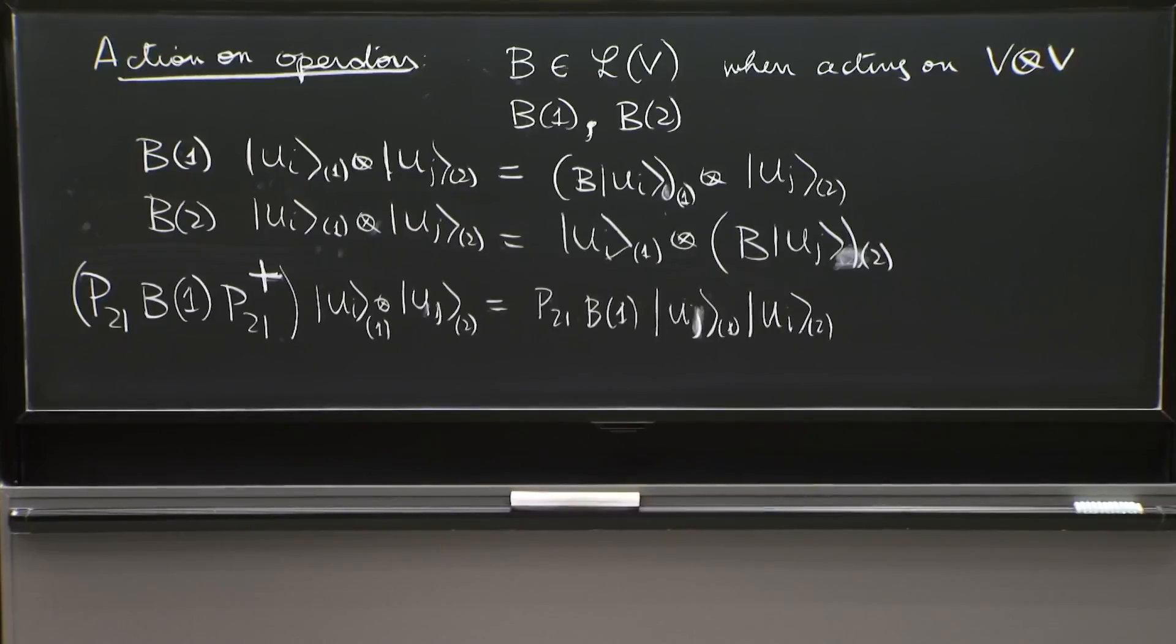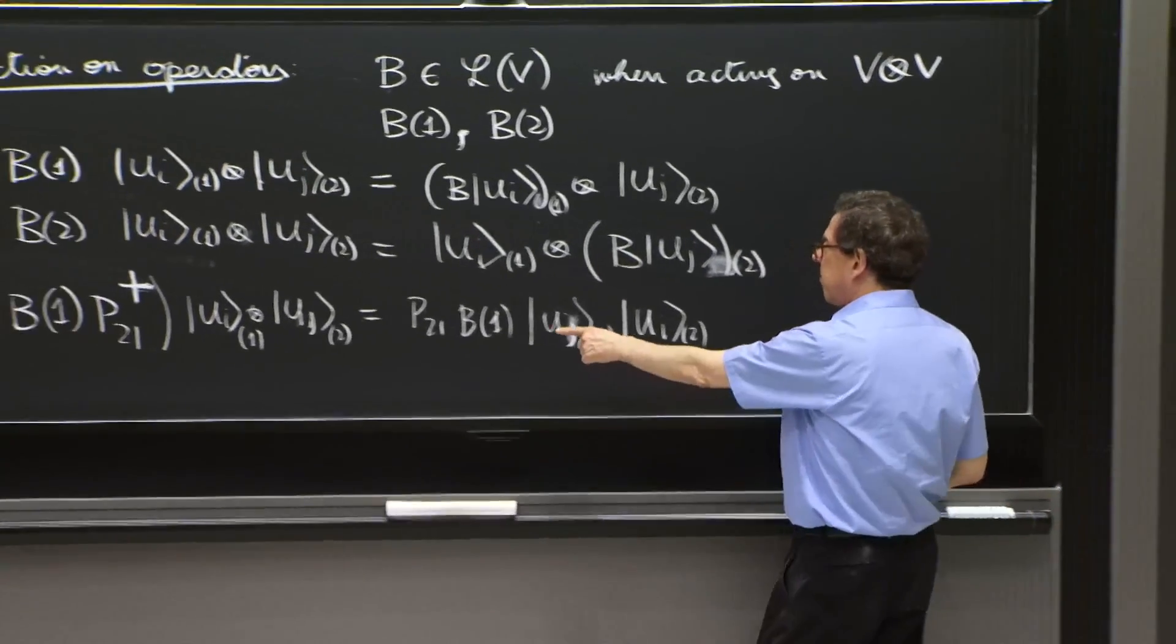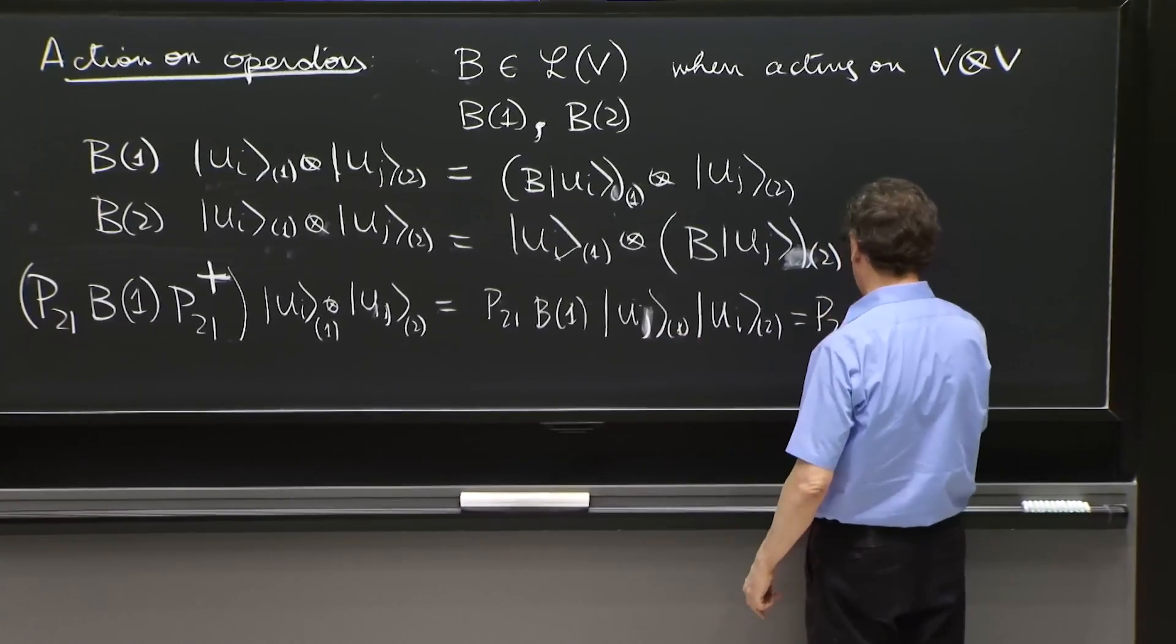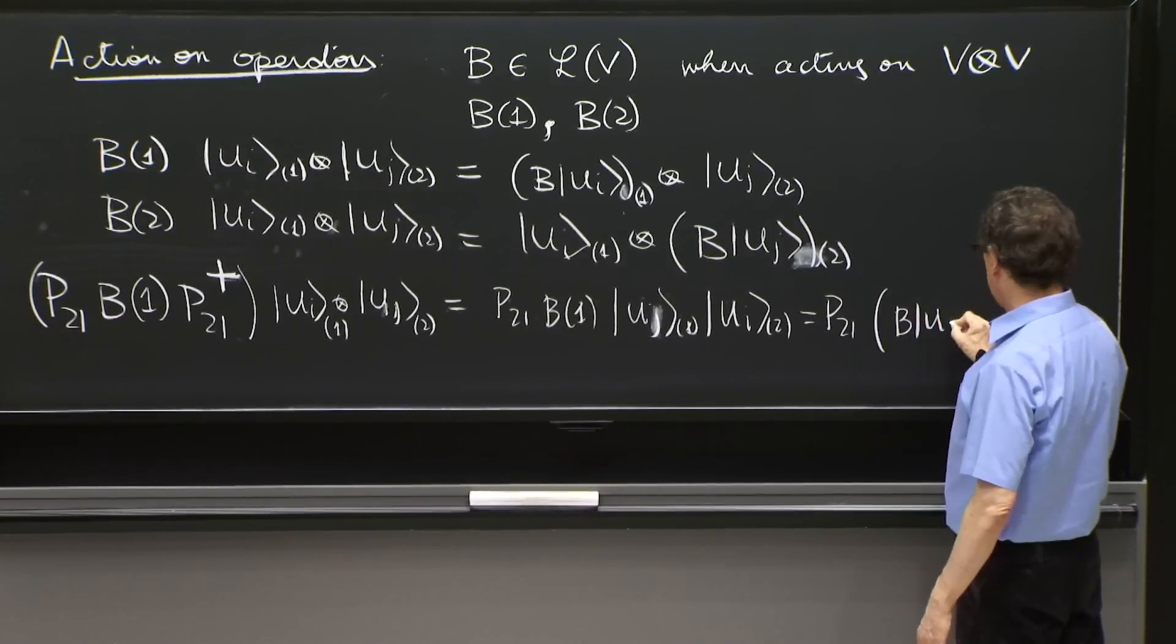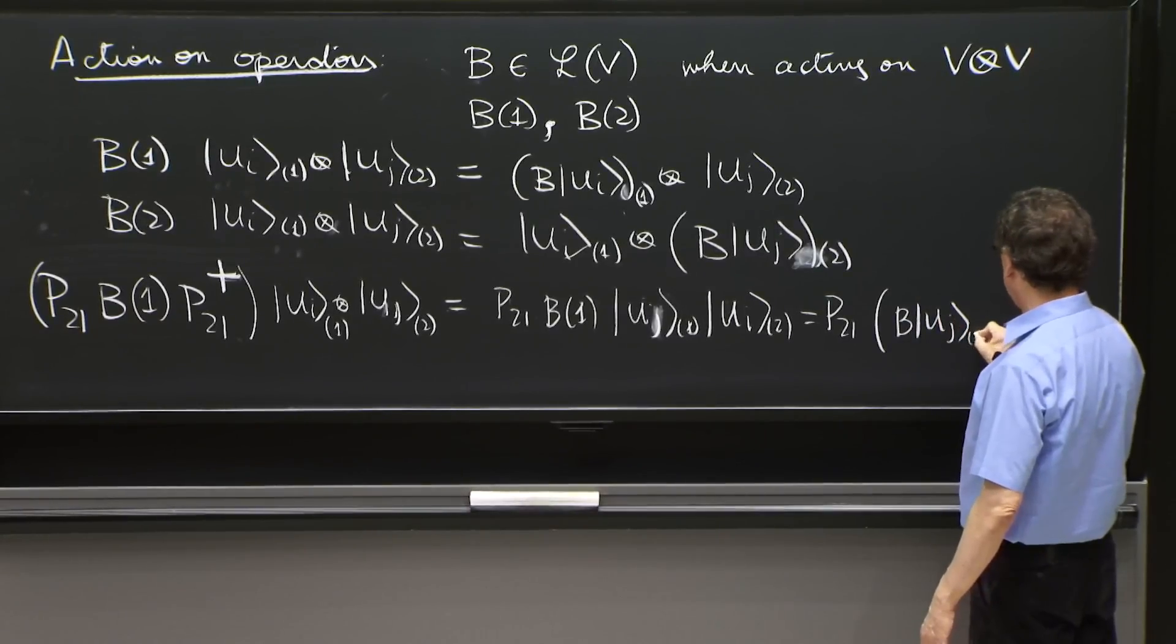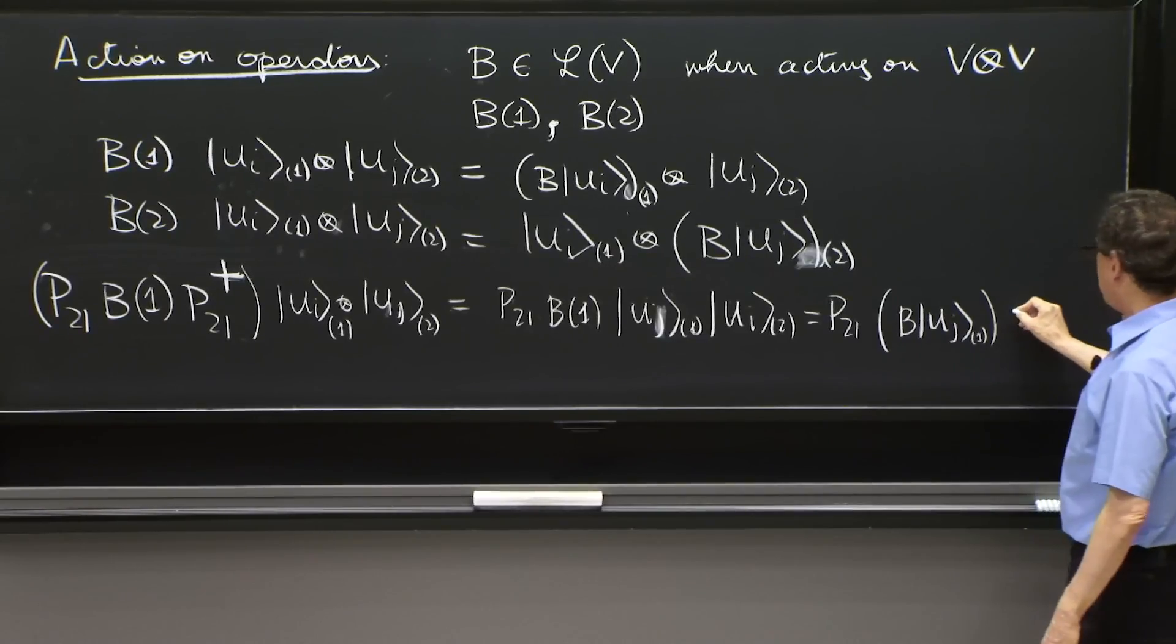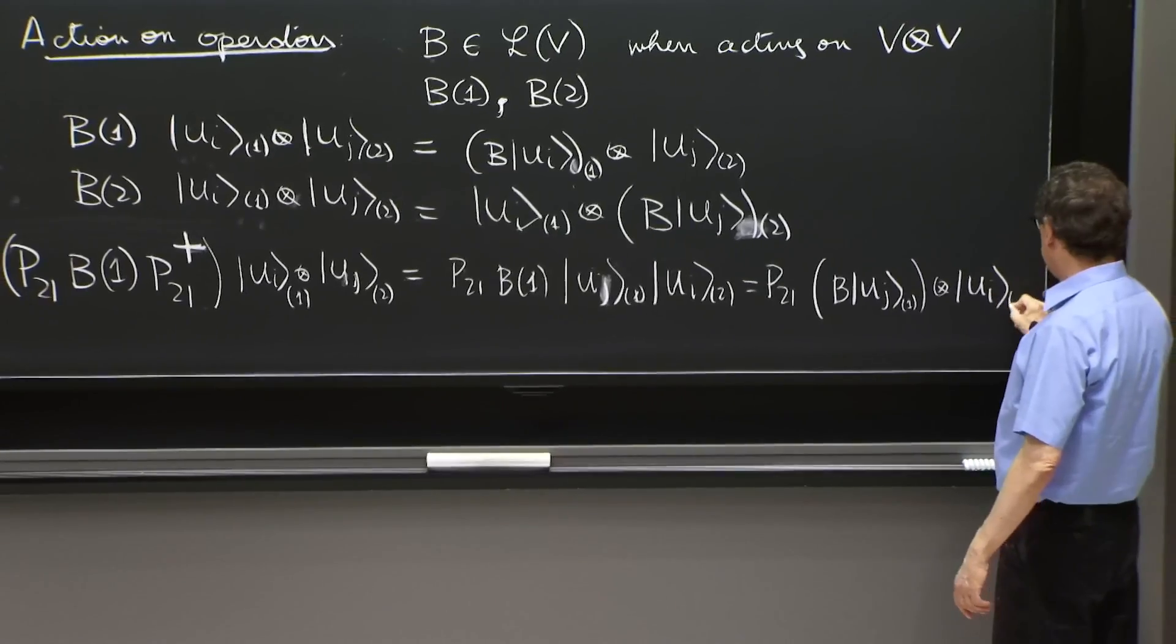So I let the P21 act on that state. And that moves the i's and the j's. Now B1 acts on the first Hilbert space. So now we have P21, and we have B, uj1, and tensor ui2.